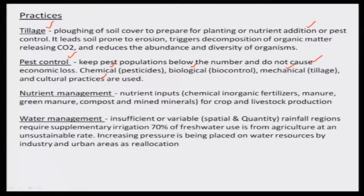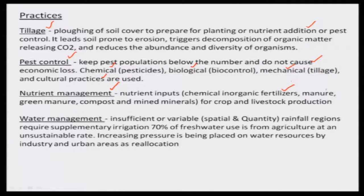Another practice used for crop yield enhancement is nutrient management. Nutrient inputs include chemical and inorganic fertilizers added so that crops grow better. Manure — organic, green, or composite — and mined minerals from different places are also added so that crop and livestock production increases.